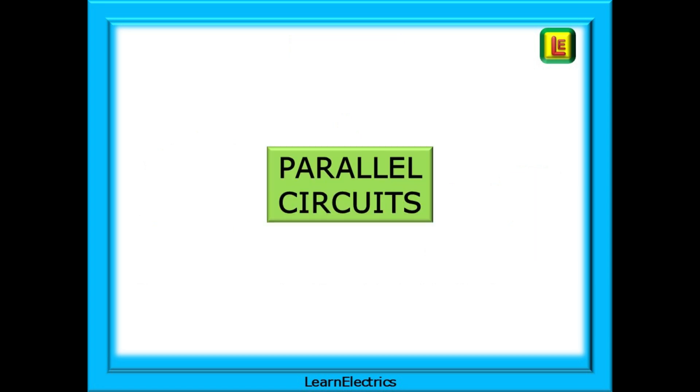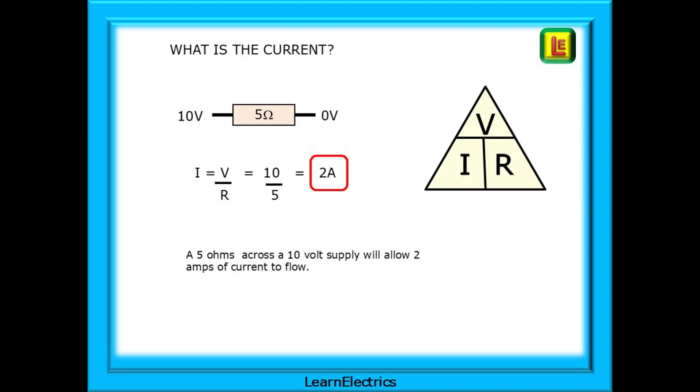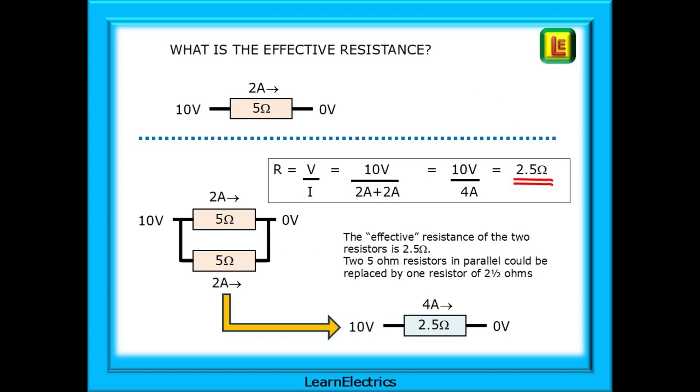Now we can consider parallel circuits and look at the differences. Let's return to our single 5 ohm resistor example across a 10 volt supply. You will remember that we calculated 10 volts divided by 5 ohms, and we had 2 amps of current.